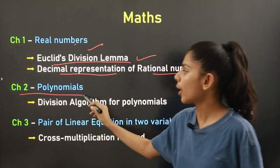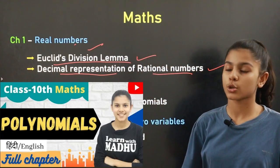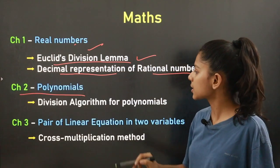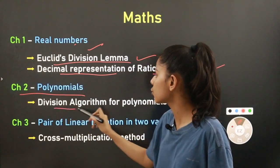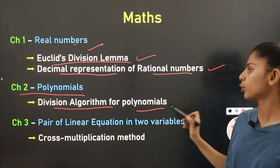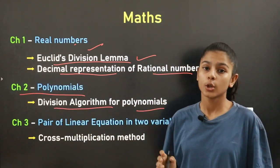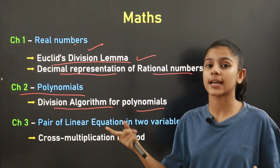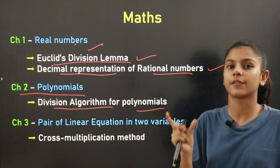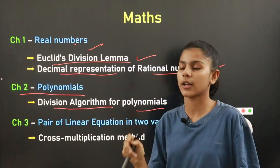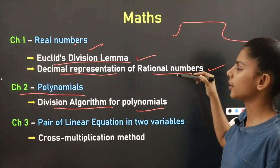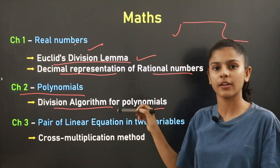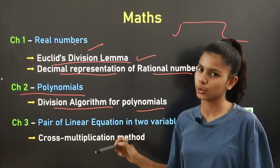Chapter number two is Polynomials. One topic has been reduced from this chapter, which is the Division Algorithm for Polynomials — that's exercise 2.5, Division Algorithm, where you divide the polynomials. This topic has been reduced.